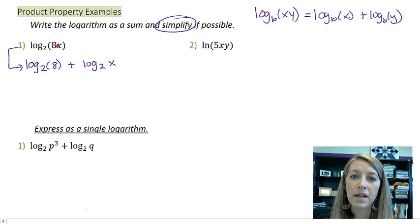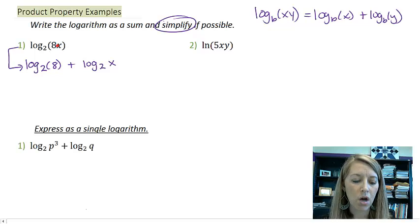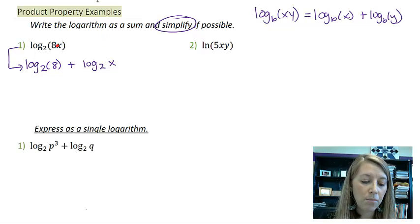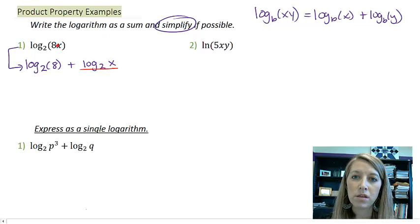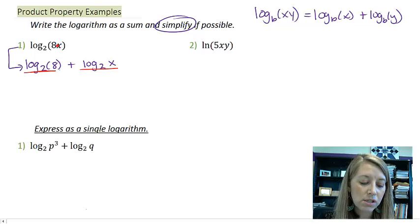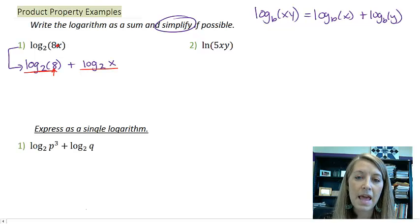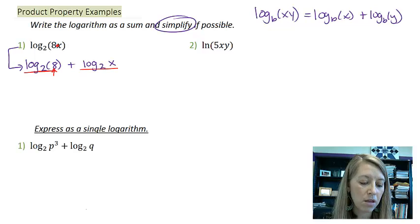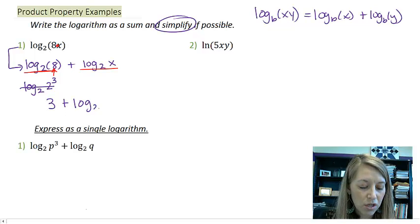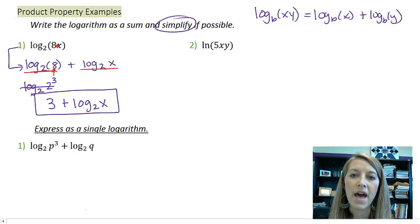Now if we can, they expect us to simplify, just like always. So I know that I'm not going to be able to do anything with this over here, but I can actually simplify this one. If I write 8 as a base of 2, then I can make those cancel out. So I have log base 2 of 2 to the third. Well, I know that that basically gives me 3. So the simplified version of this is 3 plus log base 2 of x.